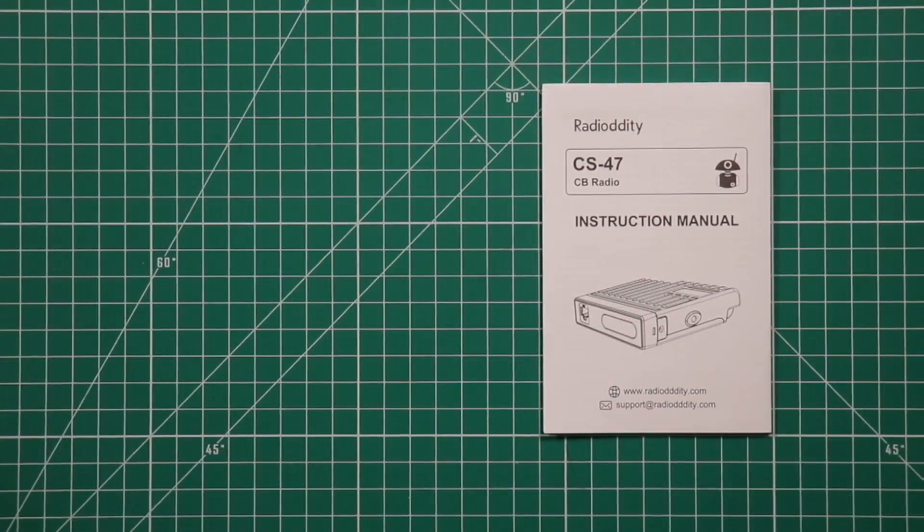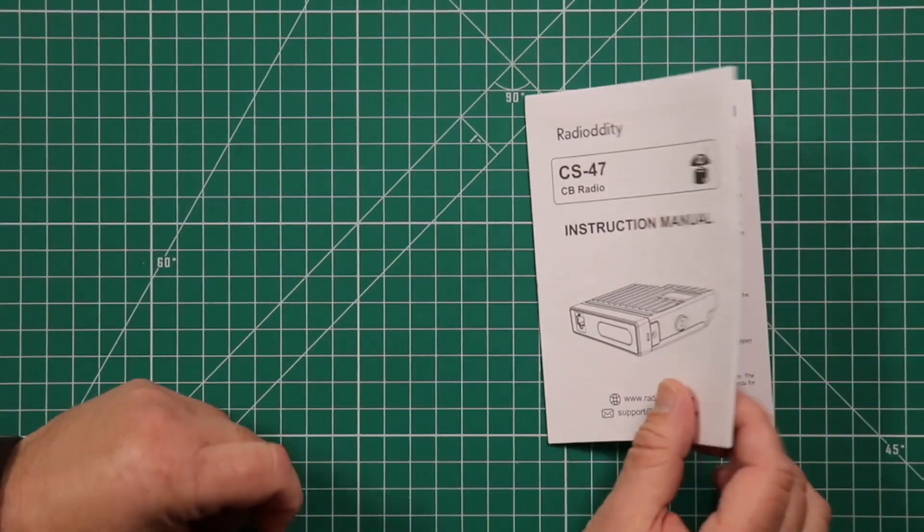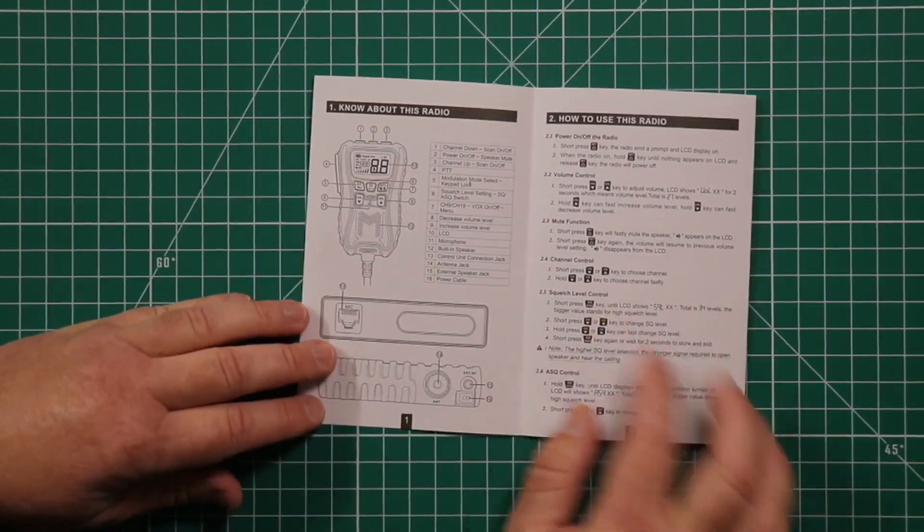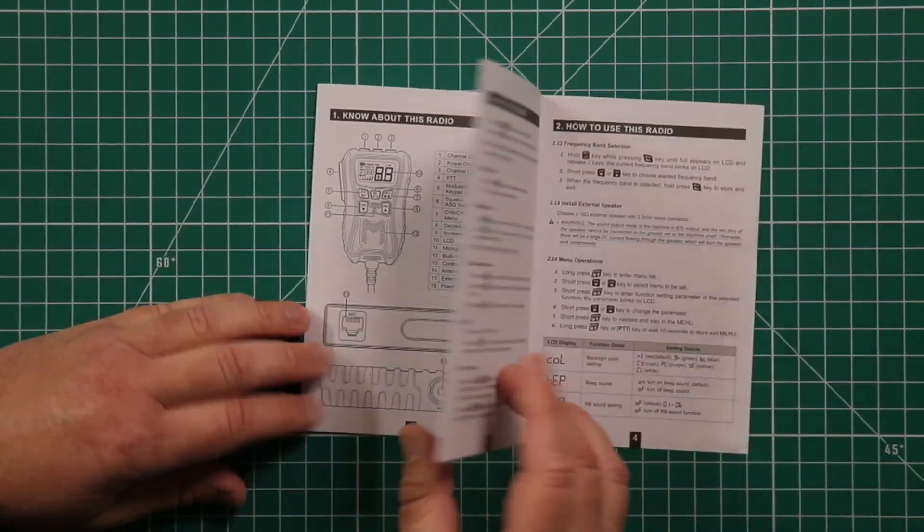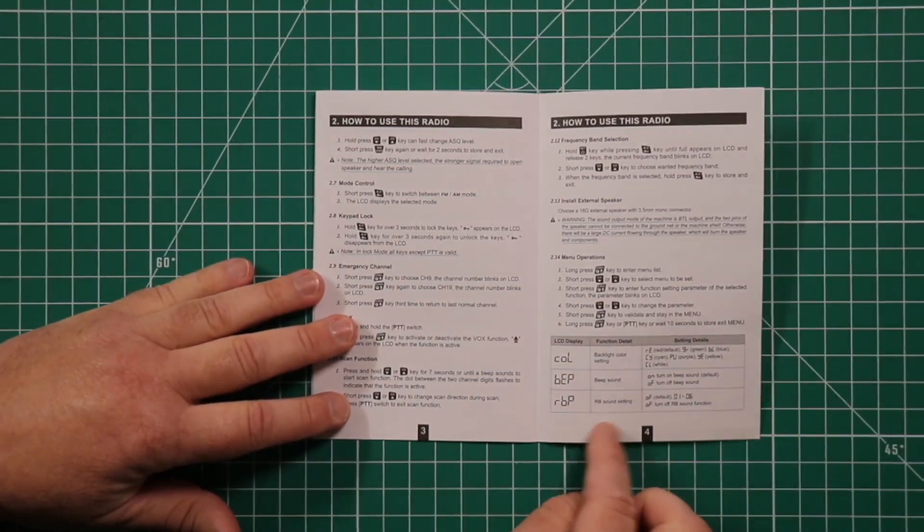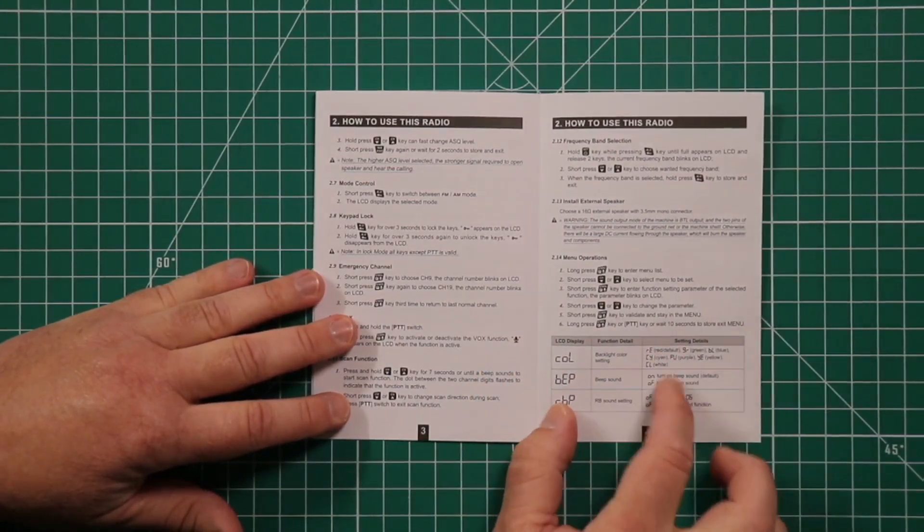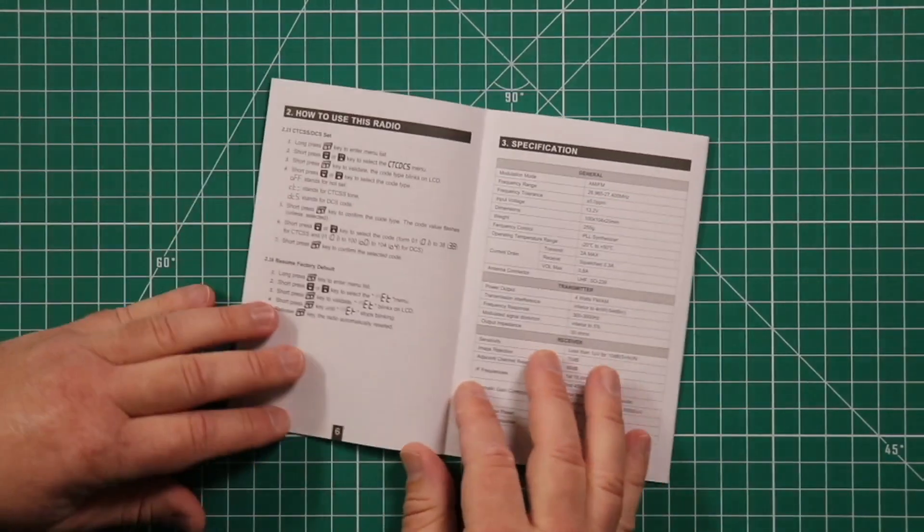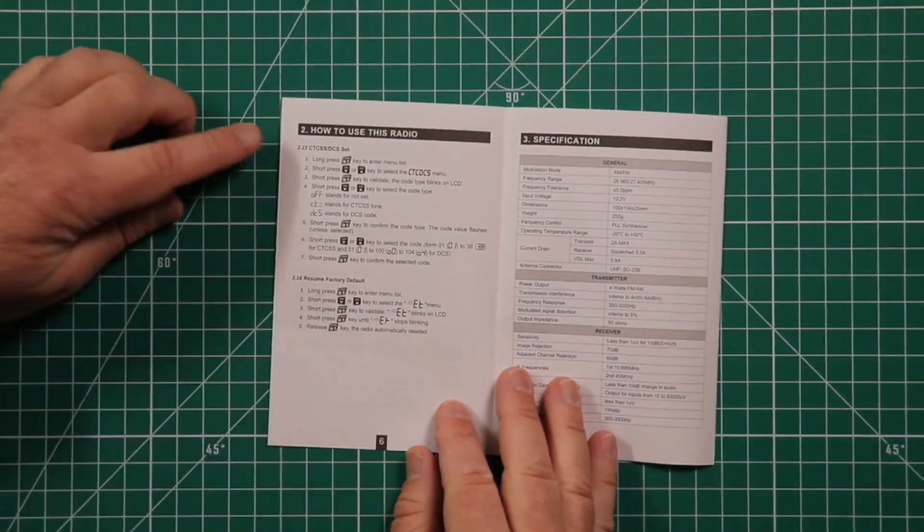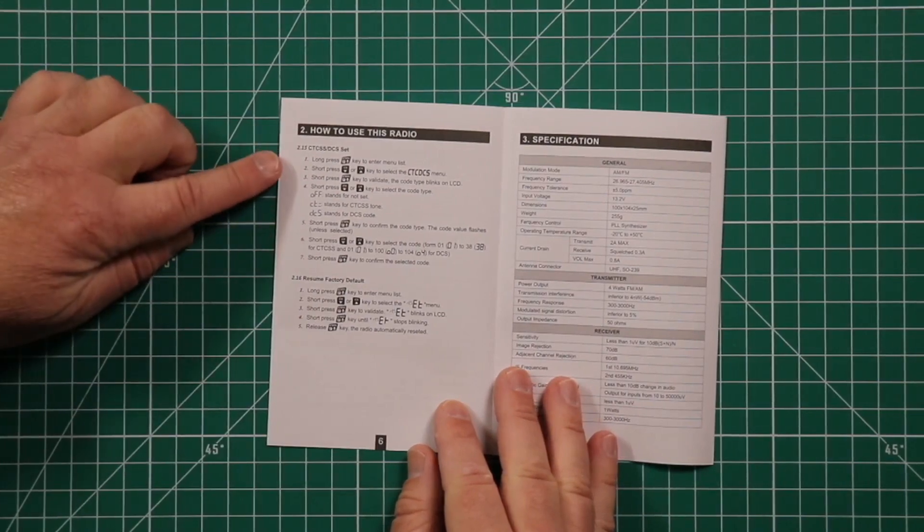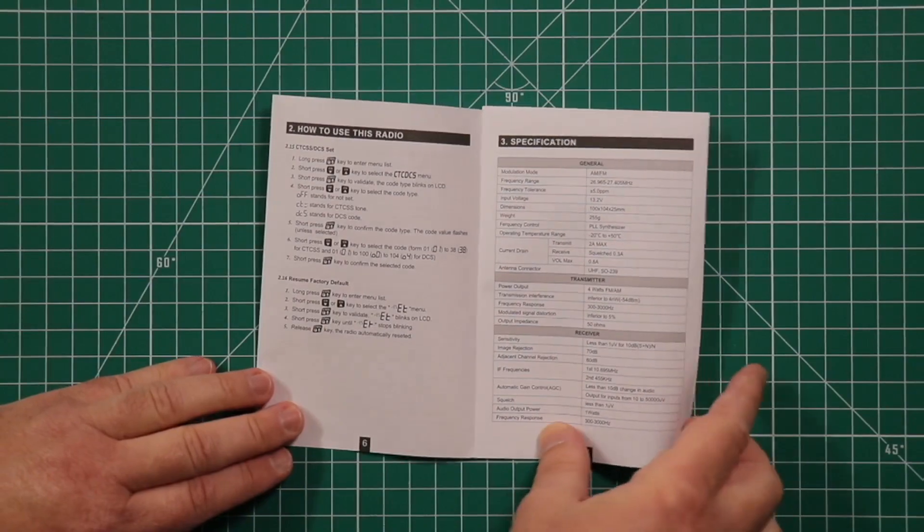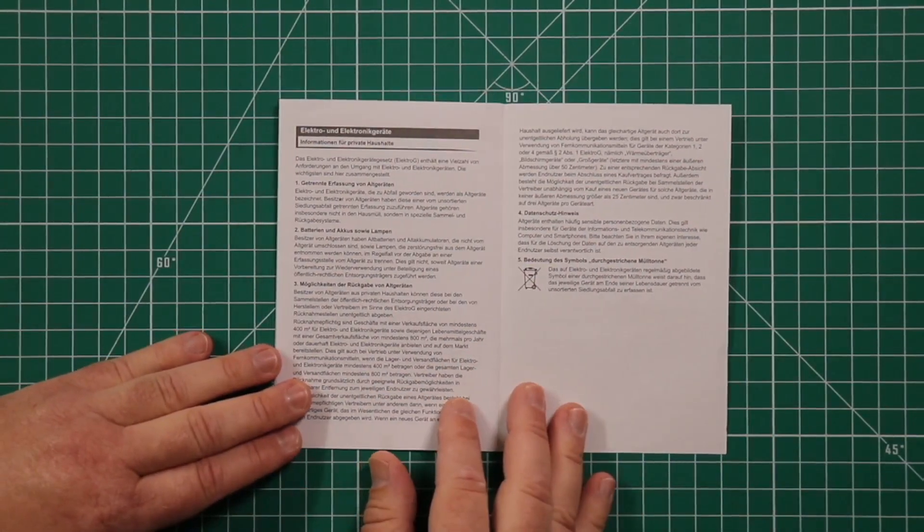The instruction manual is rather short but concise. It's only a few pages. They tell you about the radio, give you basic instructions on how to use it, then go into all the menu options including what you can do in each menu. Then they go into how you can set CTCSS and DCS up on the radio, give you a specification sheet, and then it goes to some German warnings.